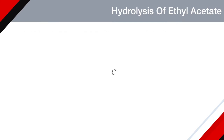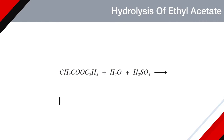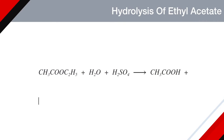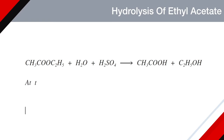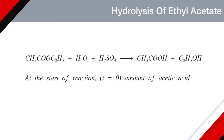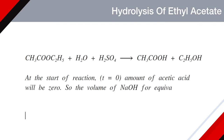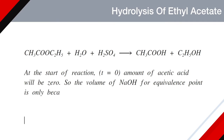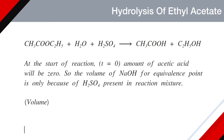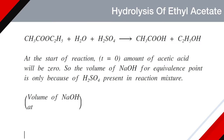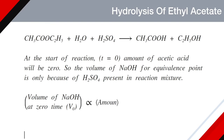Let me write the equation again: ethyl acetate plus water plus sulphuric acid produces acetic acid plus ethyl alcohol. At the start of reaction, when time is equal to zero, amount of acetic acid will be zero. So, the volume of sodium hydroxide for equivalence point is only due to sulphuric acid present in the reaction mixture. Therefore, we can write: volume of sodium hydroxide at zero time, V0, is proportional to amount of sulphuric acid. This is equation number one.